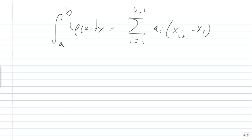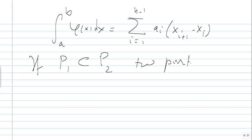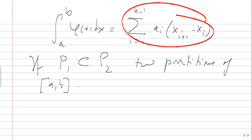What's interesting is that this sum has nothing to do with the partition. For example, if P₁ is included in P₂ — two partitions of [a,b] — then the two sums, with respect to partition P₁ or P₂, are exactly the same. From here you can show that for any partitions P₁ and P₂, you go through P₁ ∪ P₂ to get a third partition, and the sums are the same — therefore it's independent of the partition.